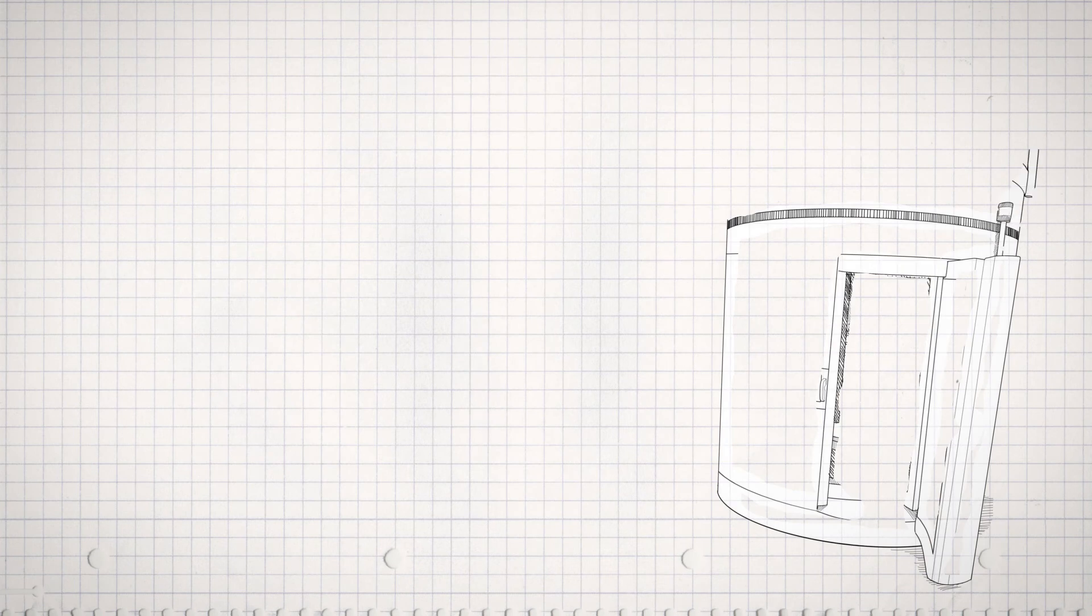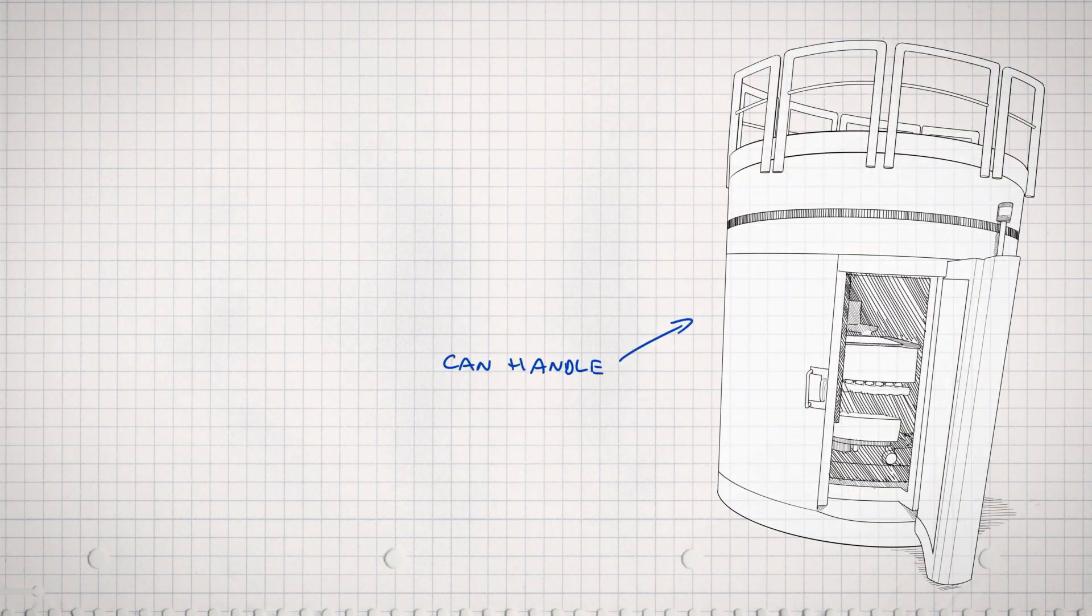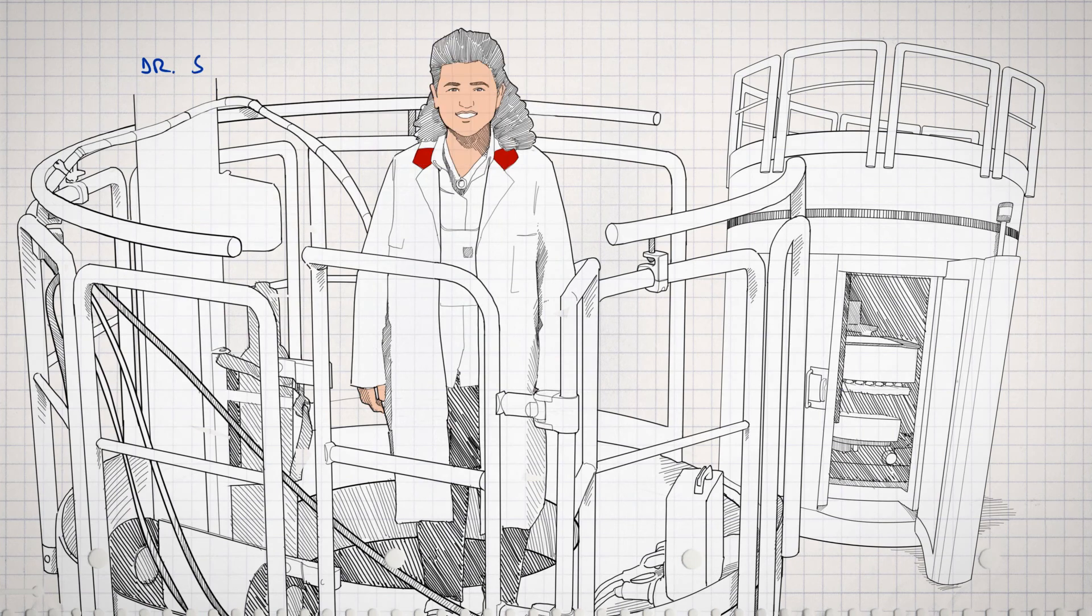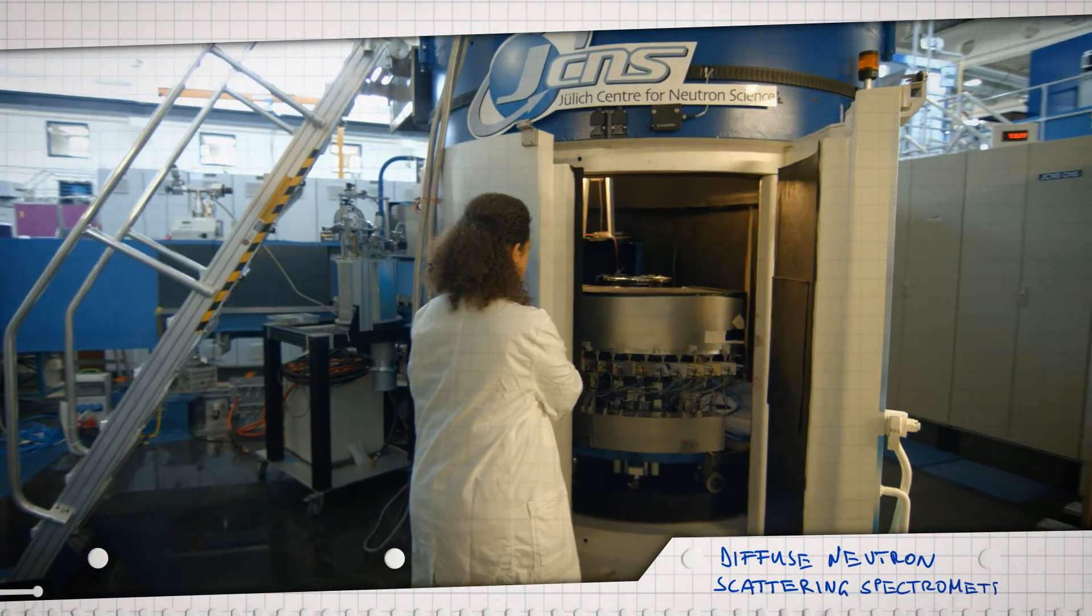But at another JCNS instrument, the spin flips can in fact be to your advantage. Meet Sultan Demedis. She's a scientist at the Diffuse Neutron Scattering Spectrometer DNS.